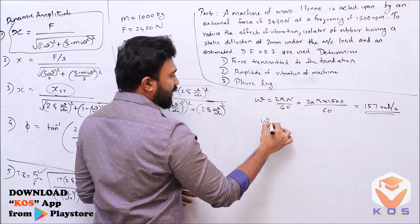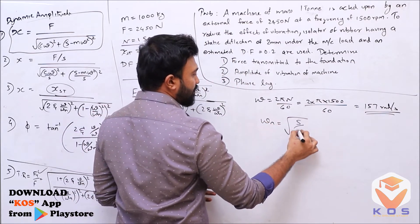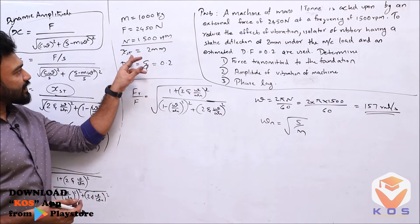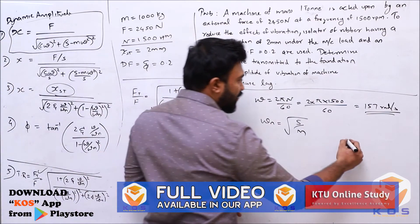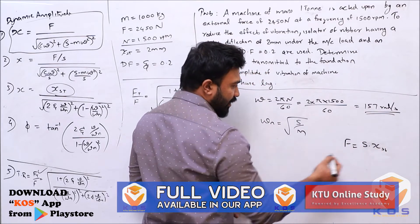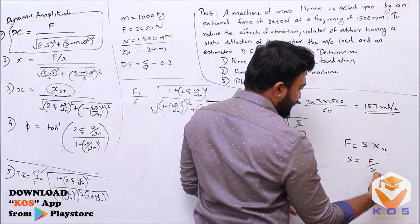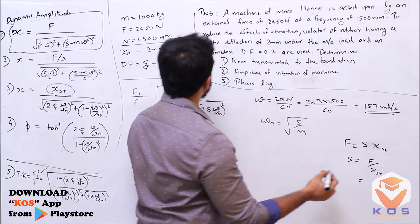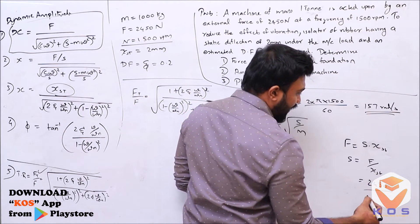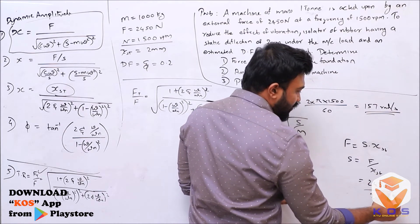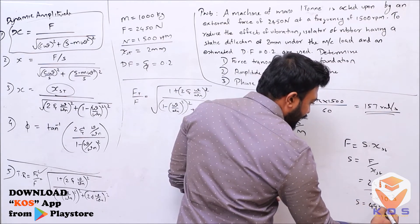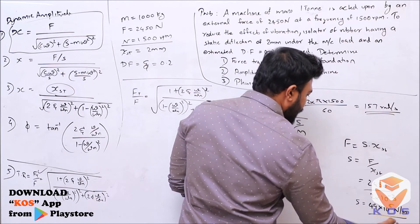Now omega_n equals square root of s/m. The stiffness s equals F/x_st, so s = 2450 divided by 2×10^-3, which gives s = 49×10^5 N/m.